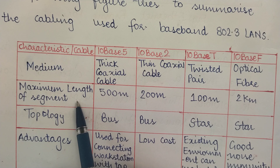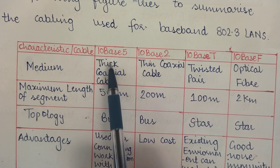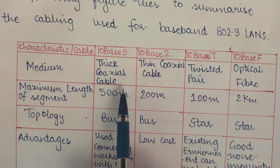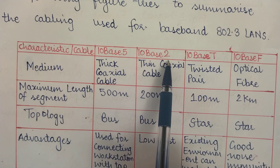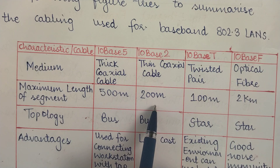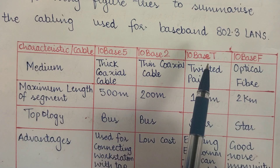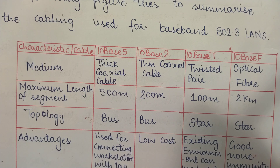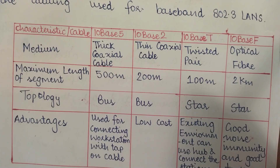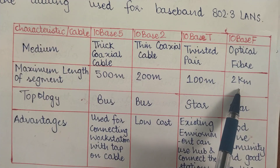The maximum segment length for 10Base5 is 500 meters. For 10Base2, the maximum length is 200 meters. For 10BaseT (twisted pair), it is 100 meters. And for optical fiber (10BaseF), it is 2 kilometers.